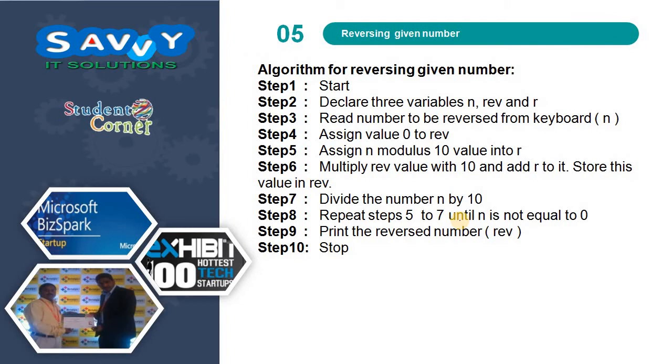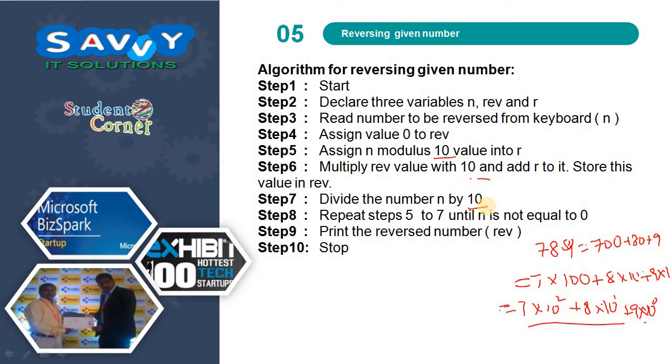The next one is reversing a given number. This is one of the little bit difficult concepts, but I will try to explain you in a better way. If you take 789, it can be represented as 700 plus 80 plus 9. When coming to 700, that's 7 into 100 plus 8 into 10 plus 9 into 1. Again, this is 7 into 10 squared and 8 into 10 power 1 and 9 into 10 power 0. This is the way we are representing a number mathematically. With this concept, why we are dividing, keep on dividing with 10 will be understood.